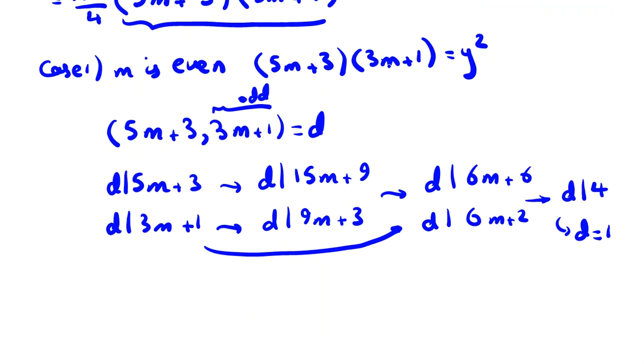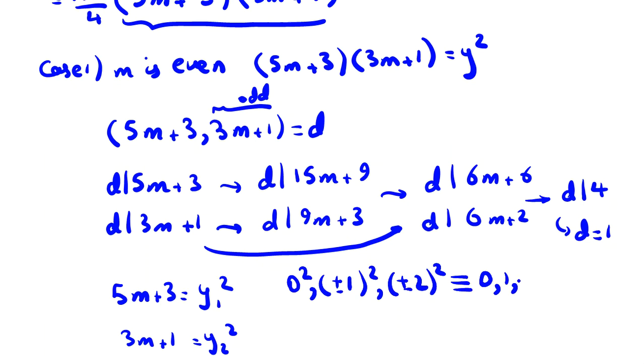So d will be 1. Now we understand each of them is a perfect square because they are coprime numbers. So 5m+3 is y₁² and 3m+1 is y₂². If you consider mod 5, numbers 0², ±1², ±2² mod 5 will be 0, 1, 4 mod 5. We don't have any 5m+3 which is y₁². So it's a contradiction.